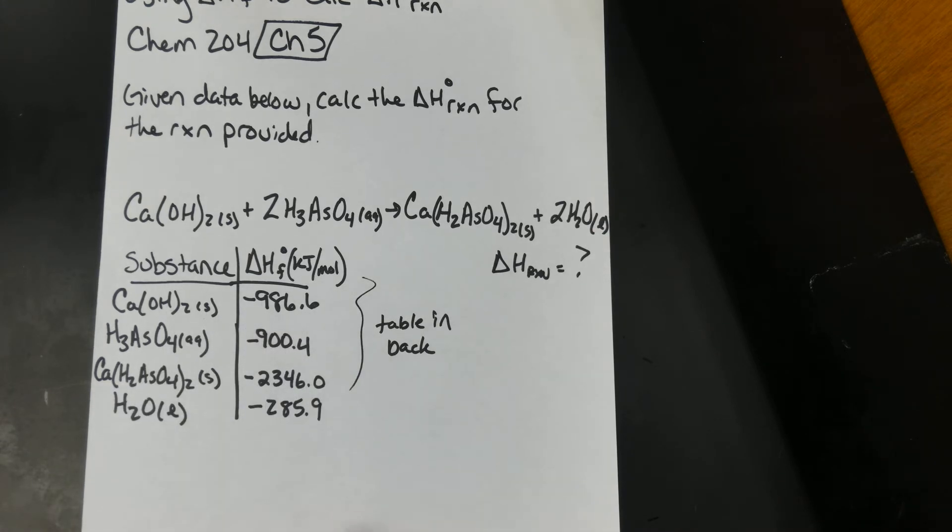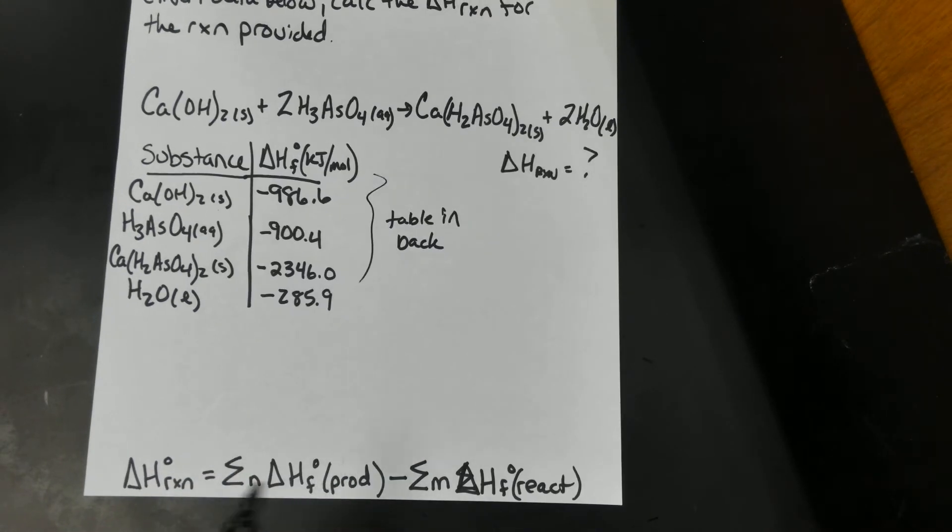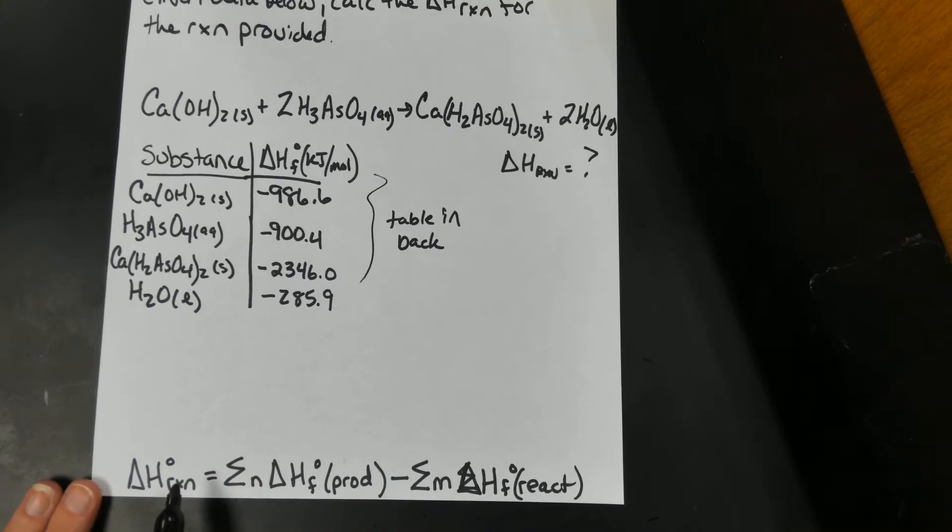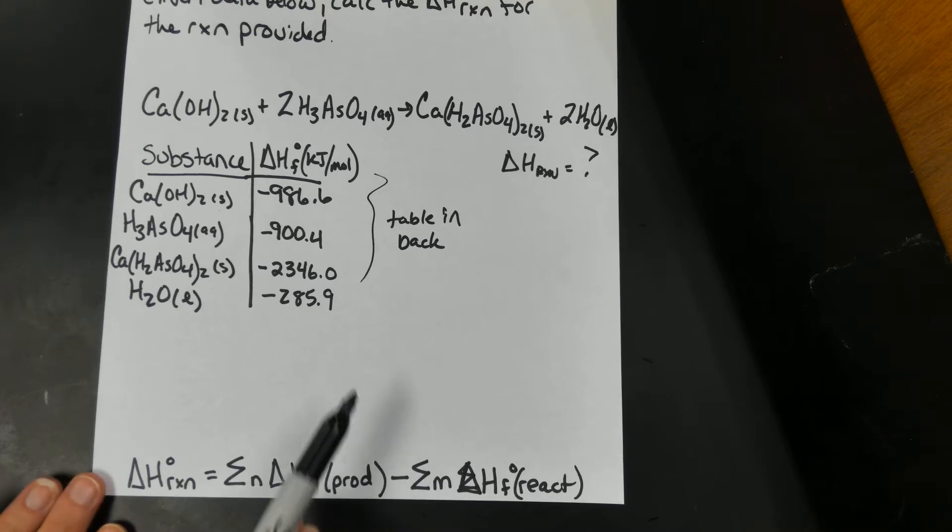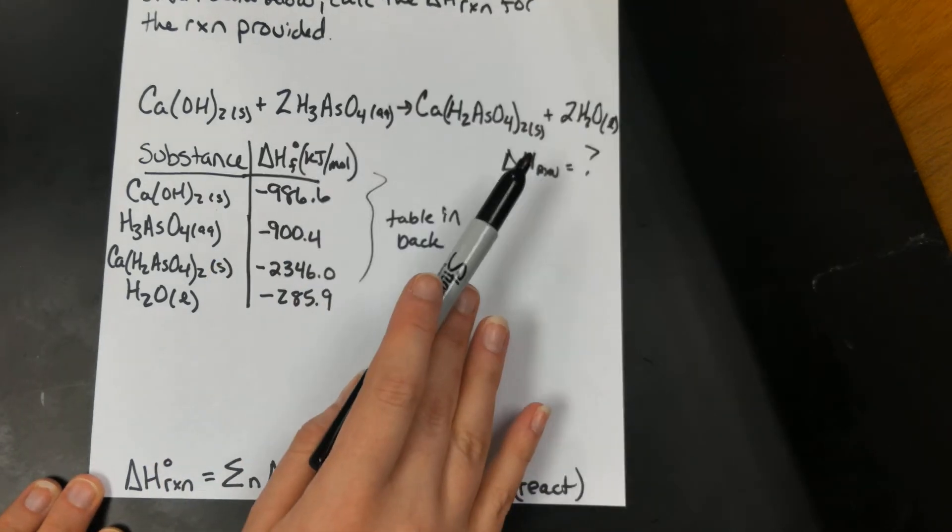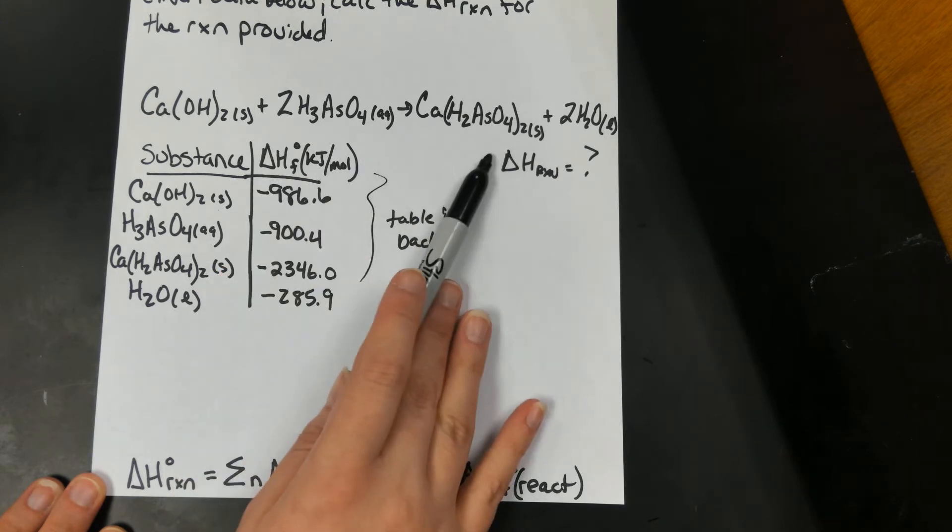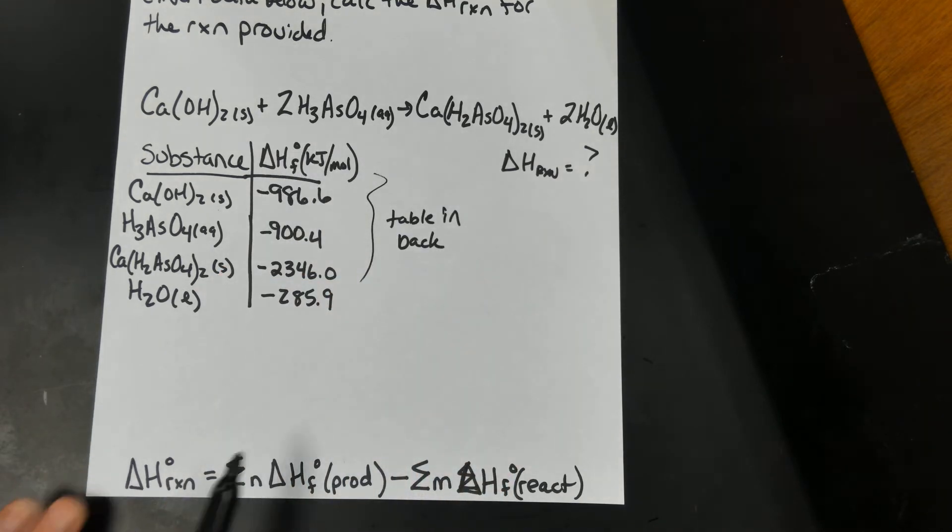Here we have the equation, and I put it on the bottom here. The enthalpy of the reaction is the summation of the moles times the enthalpy of formation of all the products minus the summation of the moles times the enthalpy of formation of the reactants. That sounds like a lot, it really isn't. That just means the products are going to be our positives, these are going to be minuses. So it's essentially this side minus this side, right side minus left side.